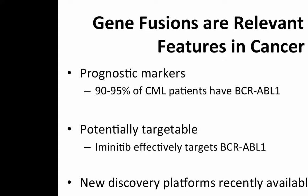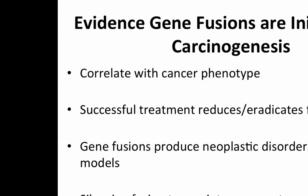At the same time as discovering TMPRSS2-ERG, new available platforms became available for discovering novel sequences, including gene fusions — RNA-seq and genome sequencing. We know that in some cancers, gene fusions are initiators of carcinogenesis because they correlate with cancer phenotype. Successfully treating some of these cancers eradicates the fusion products — they're no longer detectable in the bloodstream. In mouse models, gene fusions produce neoplastic disorders, and in cell lines, if we silence the gene fusions, we can reverse tumorigenesis.